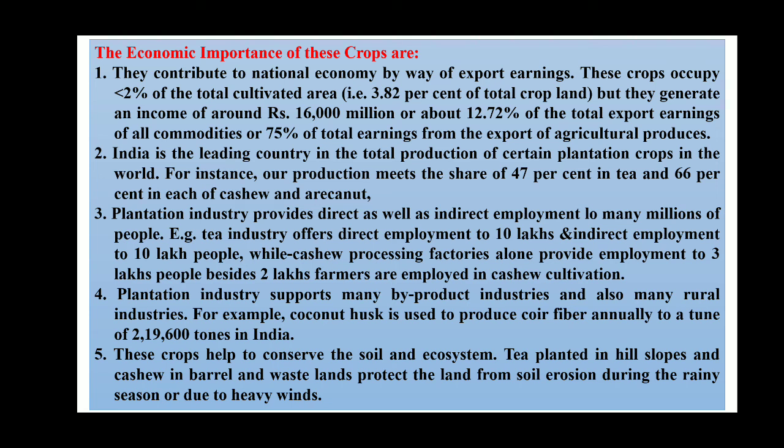Plantation industries support many byproduct and rural industries. For example, coconut husk is used to produce coir fiber — annually 2,19,600 tons in India. These crops also help conserve soil and ecosystem. Tea planted on hill slopes and cashew nuts in barren and wastelands protect the land from soil erosion during the rainy season or due to heavy winds.